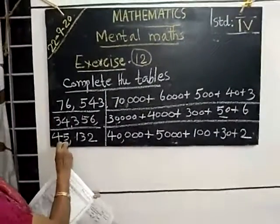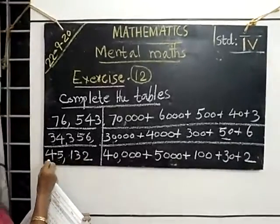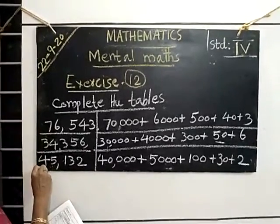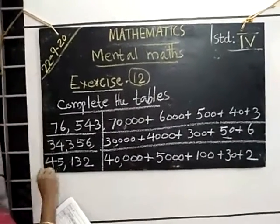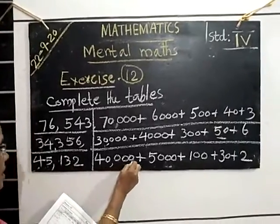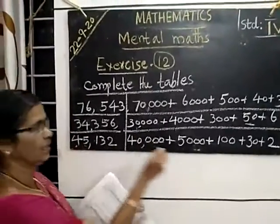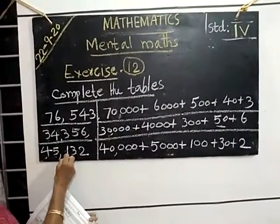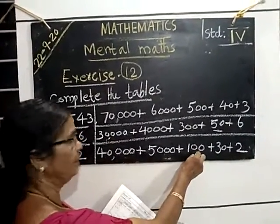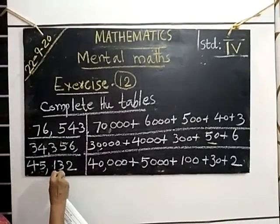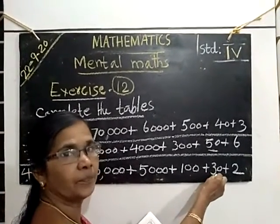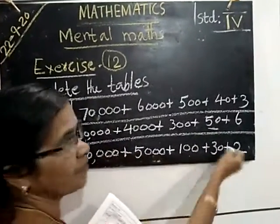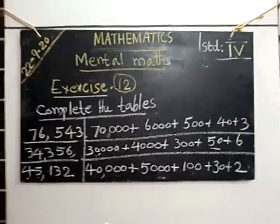Then third one, 1 lakh, 100,000. 10,000. 4 lakhs, 10,000. 4 lakhs means 40,000. Then 5,000. Here it is 5,000 plus 100. In 100th place there is 1, so 100 plus in tens place there is 3. 3 tens means 30 plus 2 ones. Here it is 2. Like that you expand the numbers and write. That is the first two forward.